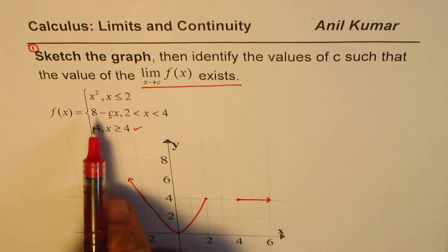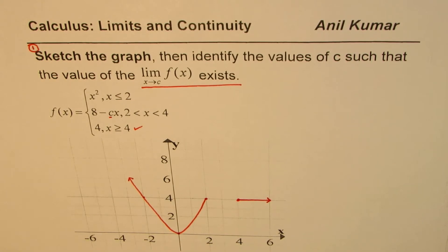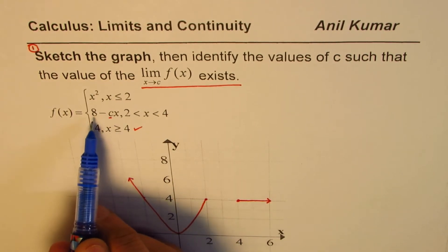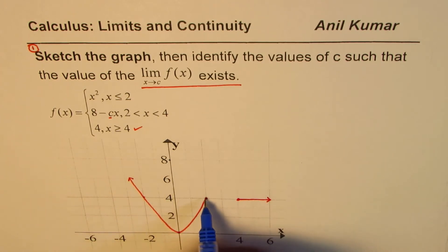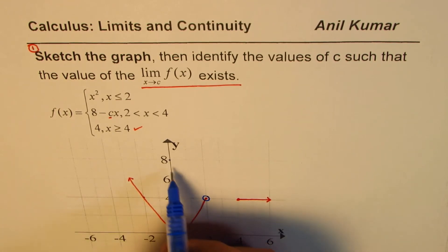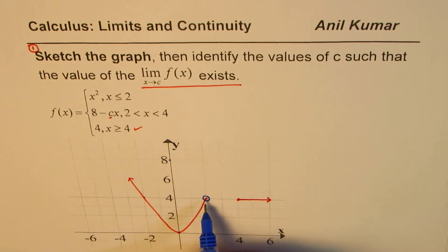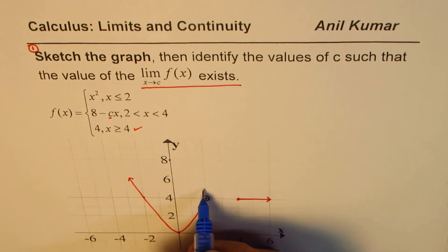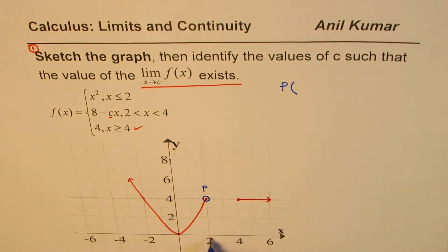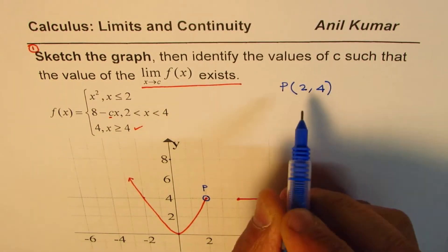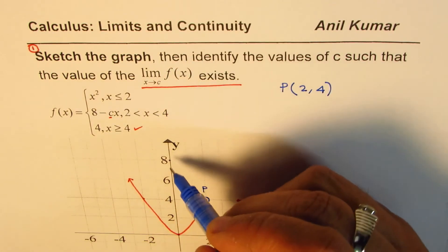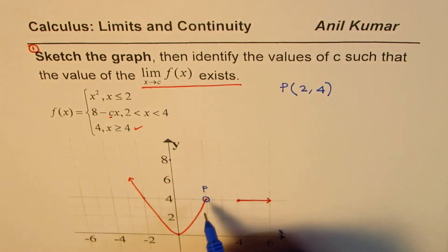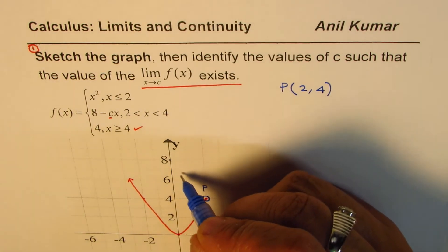Now we need to sketch the straight line segment for x between 2 and 4. This line is y = 8 − cx, which has a y-intercept at 8. That gives us one point on the line. To make the function continuous at x = 2, the line must pass through the point (2, 4) — matching the parabola value. So we know two points on this straight line: (0, 8) and (2, 4).